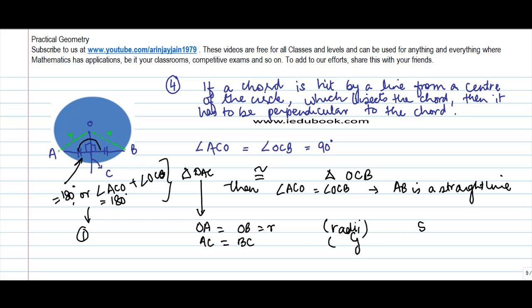Then we know that AC is equal to BC. Why? Because it is given. And OC is equal to OC. Why? Because this is common.